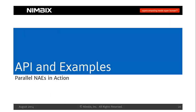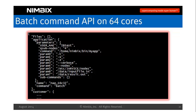Let's look at some examples of how to instantiate and consume parallel NAEs. The first example: we want to run a command on 64 cores, which means four nodes using 16-core servers. As you can see, it's a matter of selecting the NAEs and specifying in the command field the actual path to the application to run — whatever parameters you want to pass to it — and then it's off to the races.